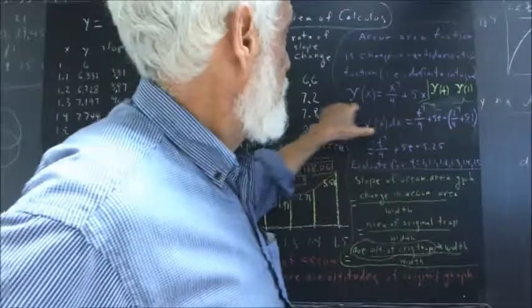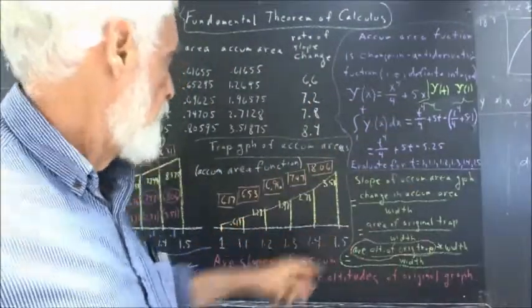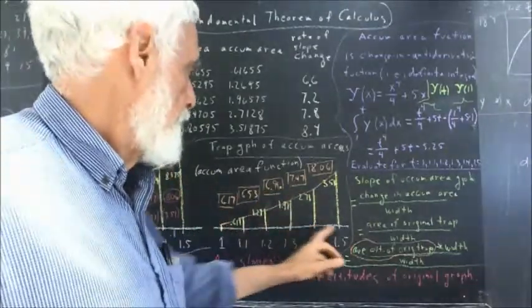So what's the change in this antiderivative function between here and any one of these points? If we let T stand for the value of one of these points.